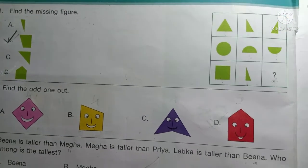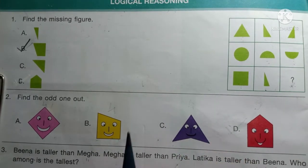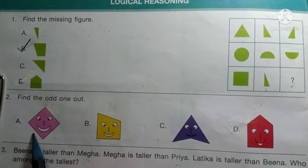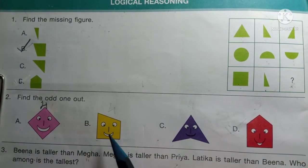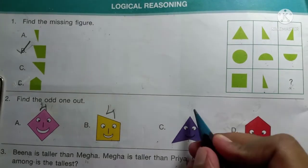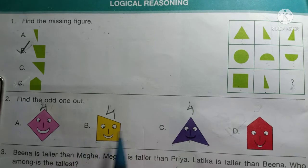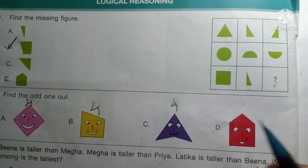Next question है: Find the odd one out — इन 4 figures में से कौन सा odd one out है? यहाँ square दिया है तो इसके corners कितने हैं? 1, 2, 3, 4 — यहाँ लिखेंगे 4. यहाँ quadrilateral दिया है तो इसके corners भी 4 हैं। A, B, C तीनों के corners 4 हैं। अब last figure में corners हैं: 1, 2, 3, 4, 5 — यहाँ लिखेंगे 5.